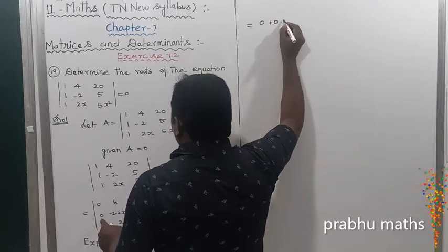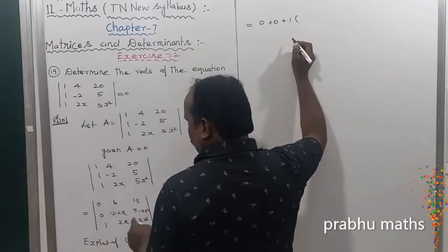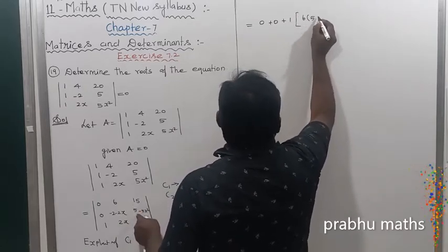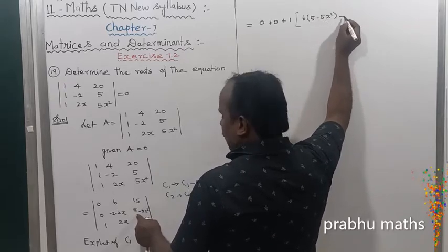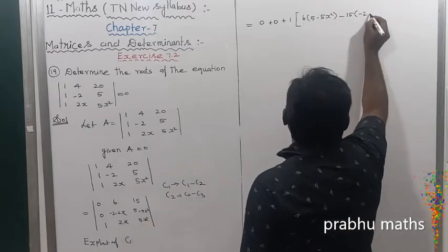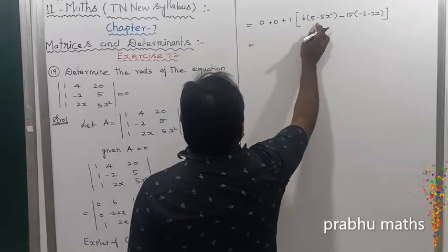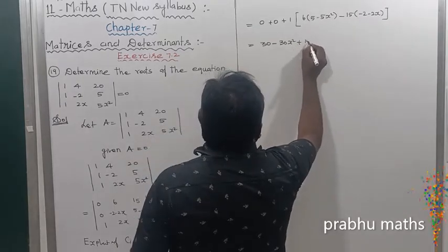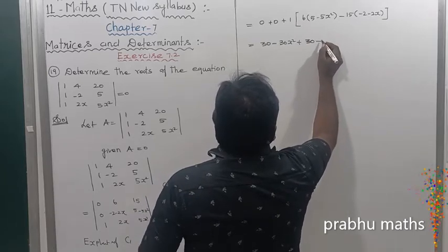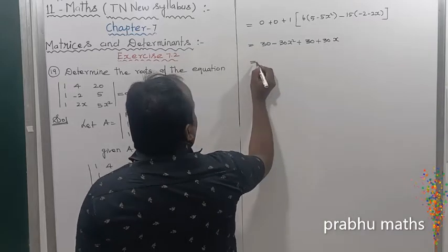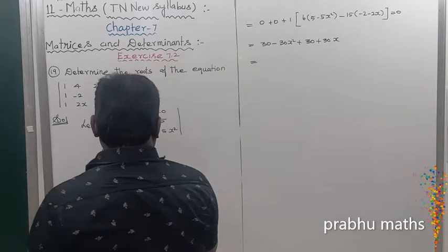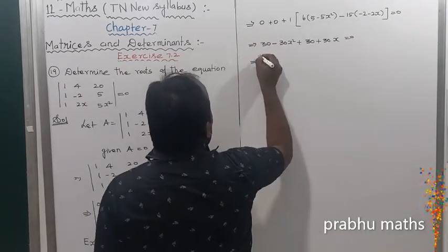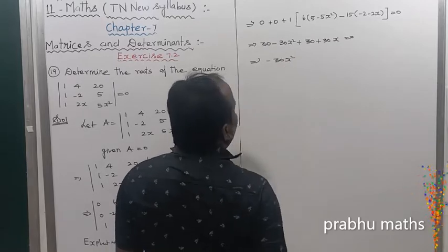The second entry minus 0 is also 0. Next, plus 1 into the remaining minor: 6 into 5 minus 5 x square. Then minus 15 into minus 2, minus 2, x. That gives 6 into open bracket 5 minus 5 x square close, minus 15 into open bracket minus 2 minus 2 close, which equals 30 minus 30 x square minus 30, plus 30 — and minus 30 plus 30 for the x terms.